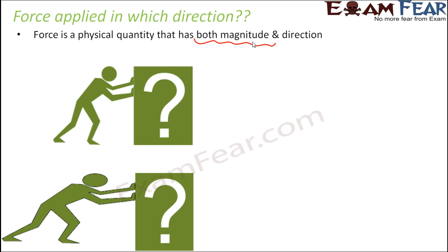What do we mean by magnitude? That means how much force is being applied. For example, if you have to move a box: in the first scenario, you are applying a small amount of force. In the second scenario, you have the same box and the same person, but here the person is applying more amount of force. So here less force is being applied, here more force is being applied — that means in this case, magnitude is small.